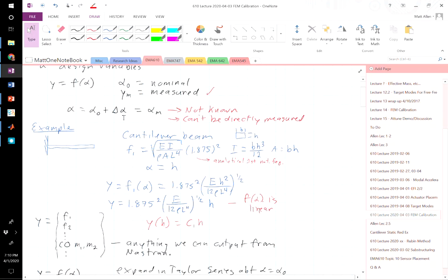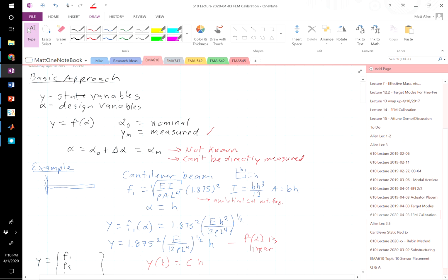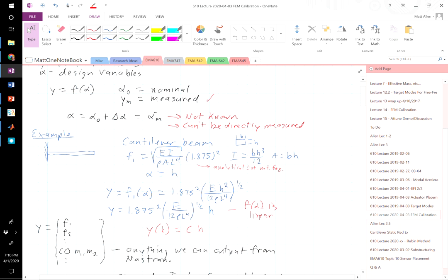Again, we're looking for alpha or a correction delta alpha that when added to our nominal will give us the parameters that bring this model into agreement. Notice in general, we can't just go measure alpha to know what it should be. If we knew the thickness better, if we knew the material properties better, we wouldn't be doing model updating. But typically, even after doing our best to estimate the nominal parameters, thickness, modulus, we still need to do some kind of correction.